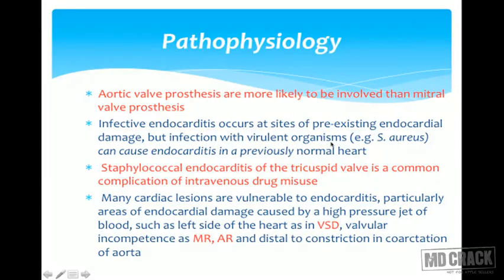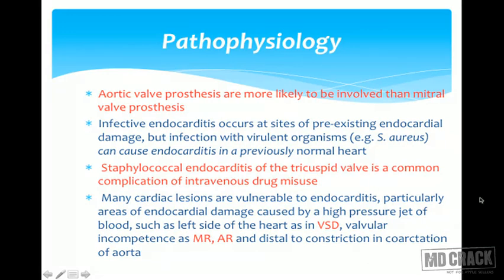Infective endocarditis occurs at sites of pre-existing endocardial damage, but infection with virulent or aggressive organisms like Staphylococcus aureus can cause endocarditis in a previously normal heart. Staphylococcal endocarditis of the tricuspid valve is a common complication of intravenous drug misuse — an important point to remember.